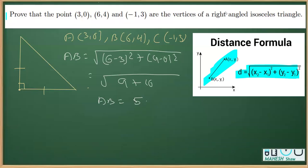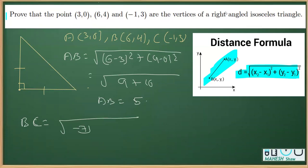Now once we got AB, next we are going to find the other length, that is BC. BC using these two coordinates: (x₁ - x₂)² is (-1 - 6)², that is (-7)², plus (y₂ - y₁)² that is (3 - 4)², which is (-1)². So we get the length of BC as the square root of 49 + 1, which is equal to the square root of 50.